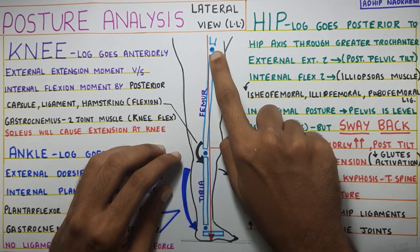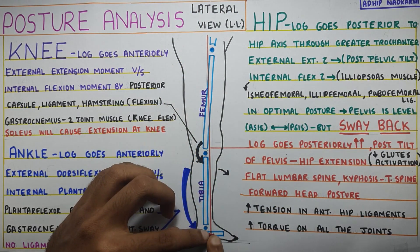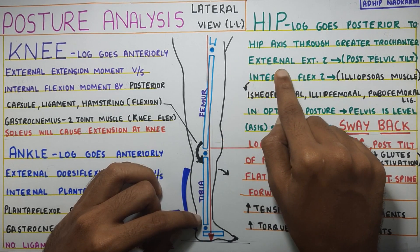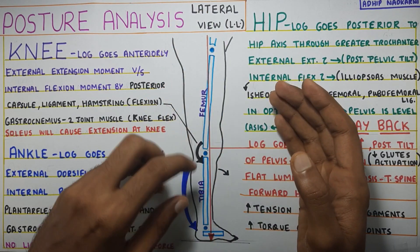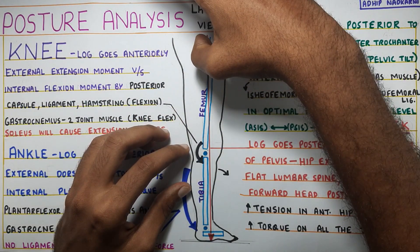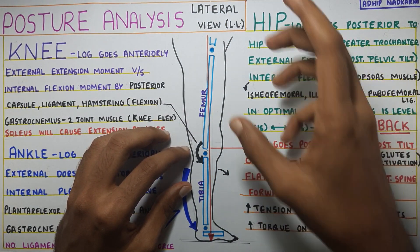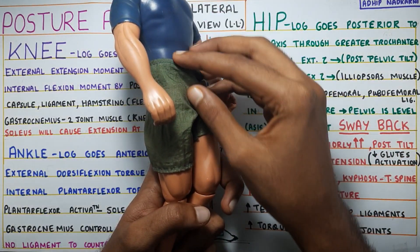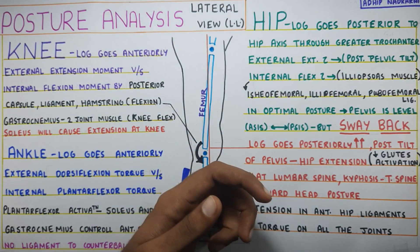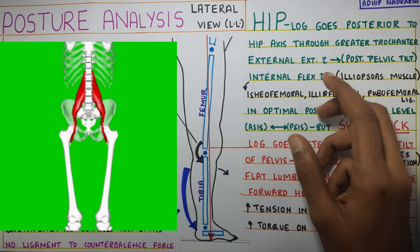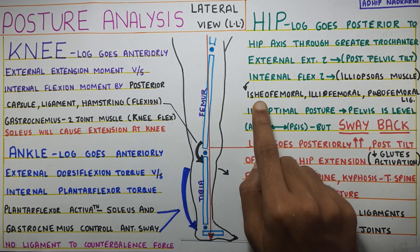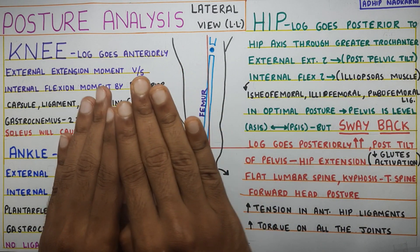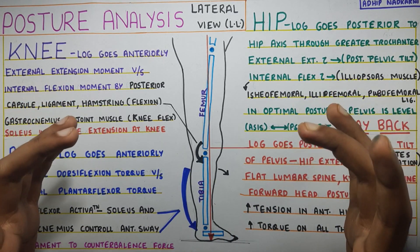At the hip, the line of gravity goes posteriorly — anterior at the ankle, anterior at the knee, and then posteriorly at the hip axis (the third dot). This creates an external extension torque, causing the pelvis to go into posterior tilt. The internal torque is for flexion, countered by the iliopsoas muscle and the anterior ligaments of the hip — the ischiofemoral, iliofemoral, and pubofemoral ligaments. In the optimal position, the pelvis is level, meaning the ASIS and PSIS are at the same height.